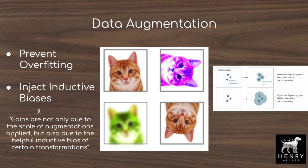Another way of looking at it is that this is a way to inject inductive biases. It isn't just that we're increasing the size of our dataset — it's that we're telling the model to be invariant to rotating the cat. It's an inductive bias to tell it that an upright cat is still a cat when it's rotated or when it's pink. A quote from the paper is that gains are not only due to the scale of augmentations applied, but also due to the helpful inductive bias of certain transformations. So data augmentation is also about the ways these augmentations are providing priors to the deep learning system.